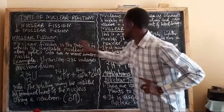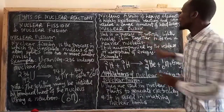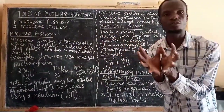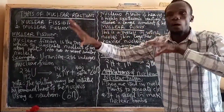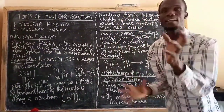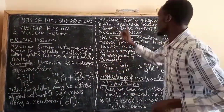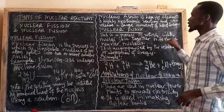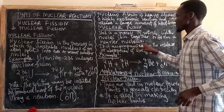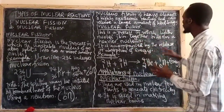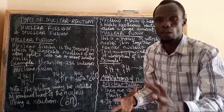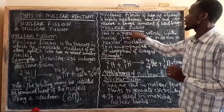After nuclear fission, we have nuclear fusion. Fusion comes from the word 'fuse,' meaning getting together — joining two things together so as to form another. So nuclear fusion is all about joining lighter nuclei together to form a heavier one. It is the process in which lighter nuclei join together to form a heavier nucleus.